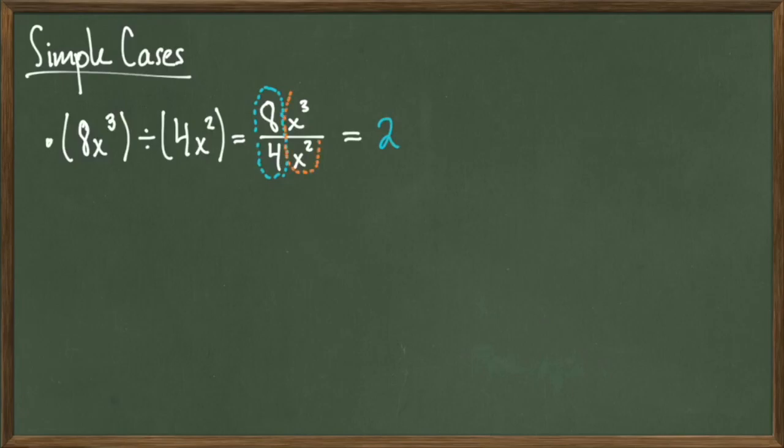Then, looking at the x terms, x cubed over x squared gives us this result from exponential operations. Therefore, our final answer, 2 times x to the 3 minus 2 becomes 2x.